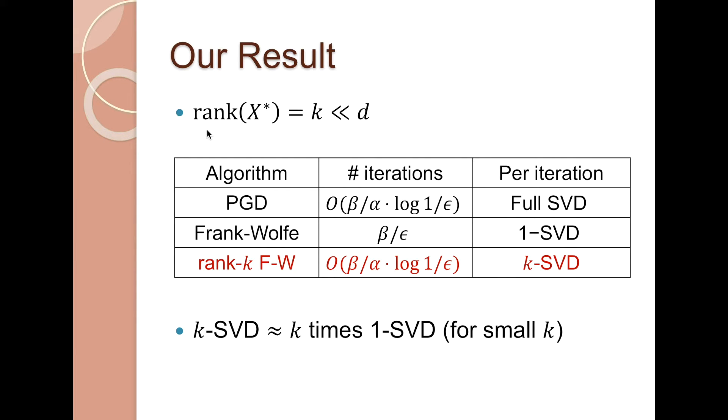Also note that this low rank assumption on x* should be reasonable, since as we mentioned, the main reason for imposing a trace norm constraint in many applications is to ensure that the optimal solution is close to low rank. Otherwise, the problem we are trying to solve may not be interesting in the first place.